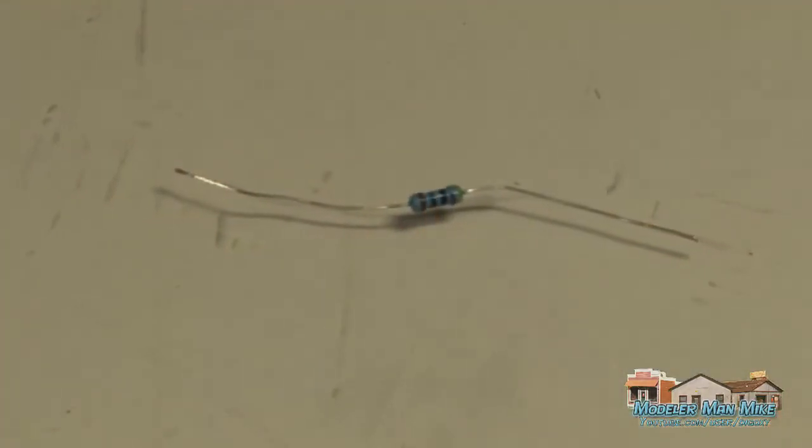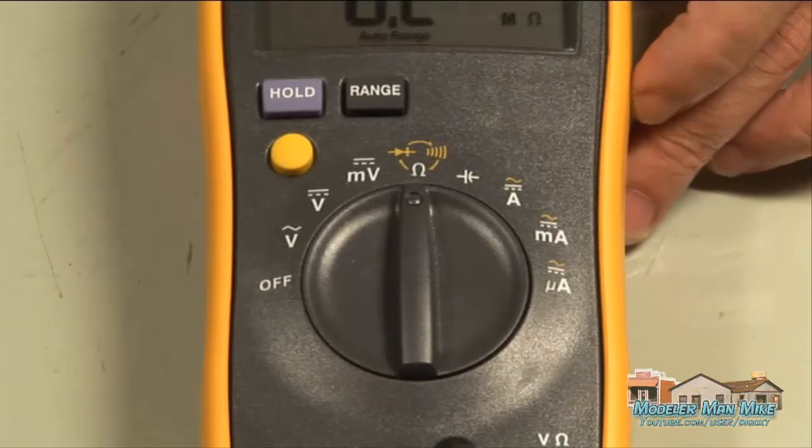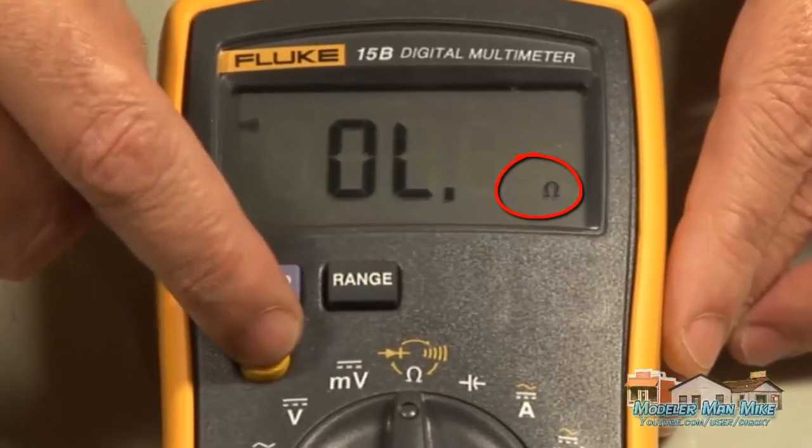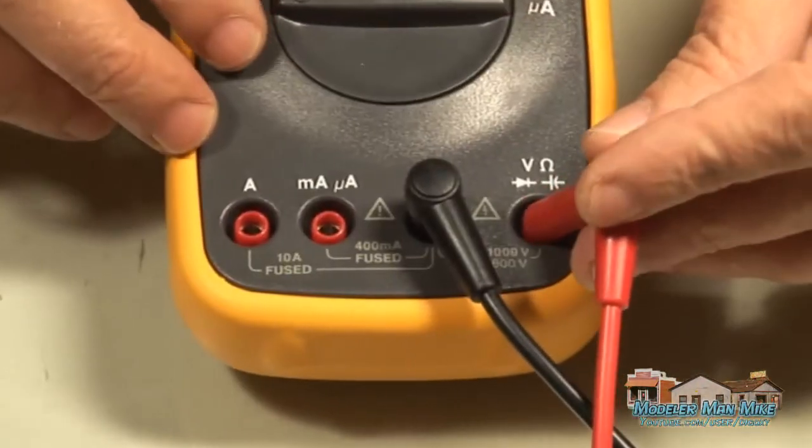Here we're going to test some resistors. I'm going to set my multimeter up here. Turn the selection knob to ohm. Make sure my function key is set to ohm. Plug my test lead into the ohm port.